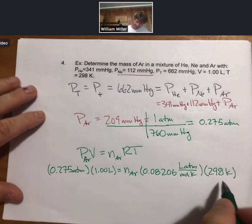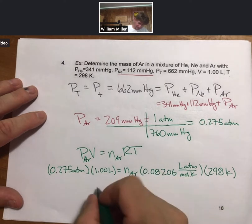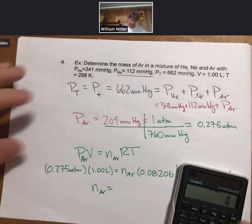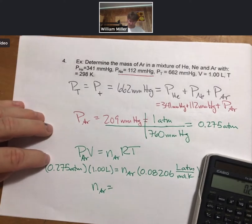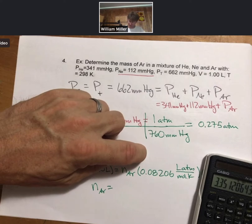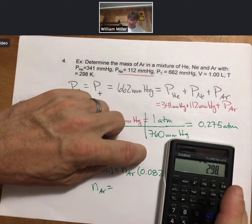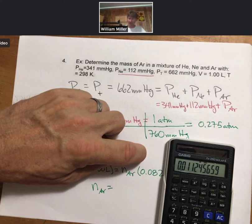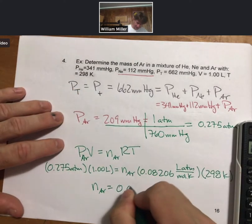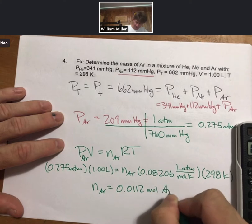Now, rearranging and solving, I'll do it. 0.275 times 1 divided by 0.08206 divided by 298. Then 0.0112 moles of argon.